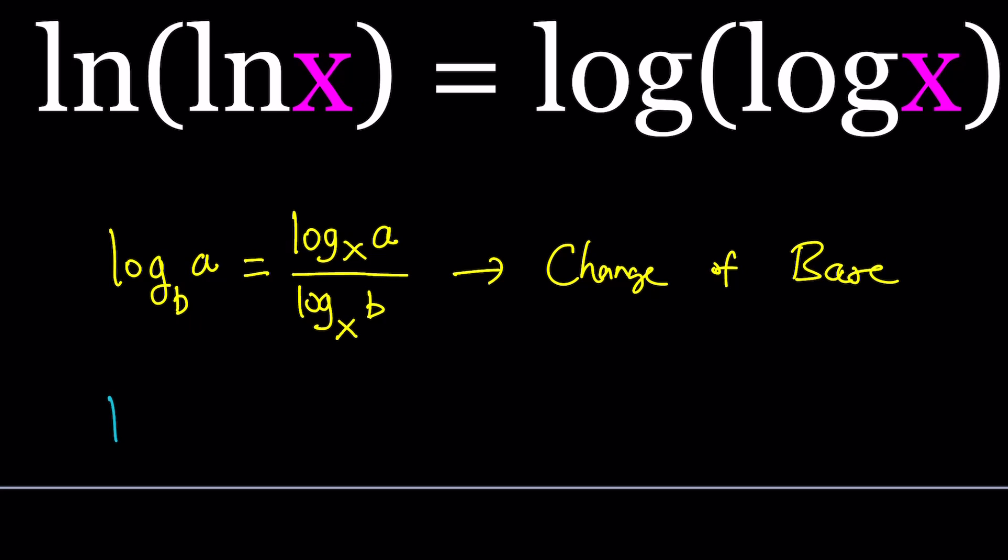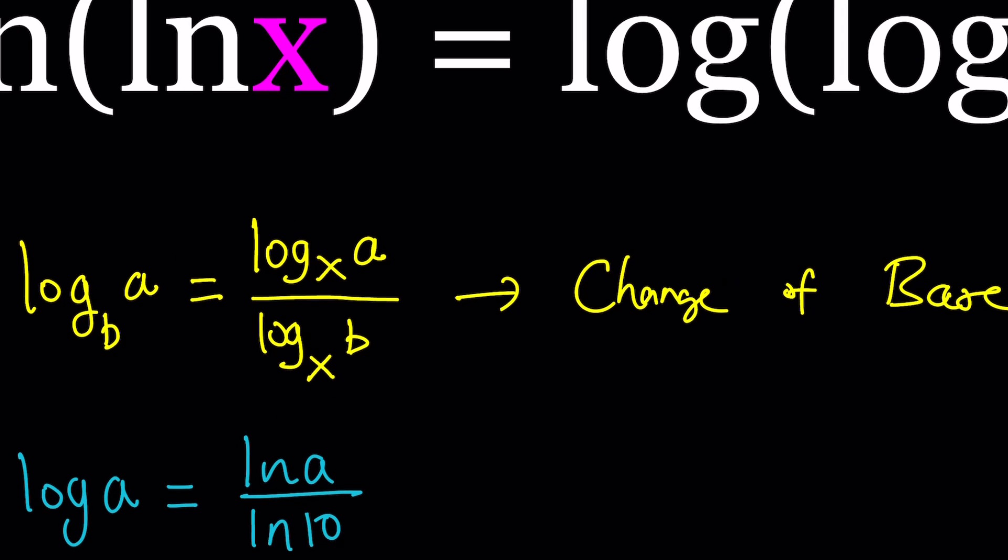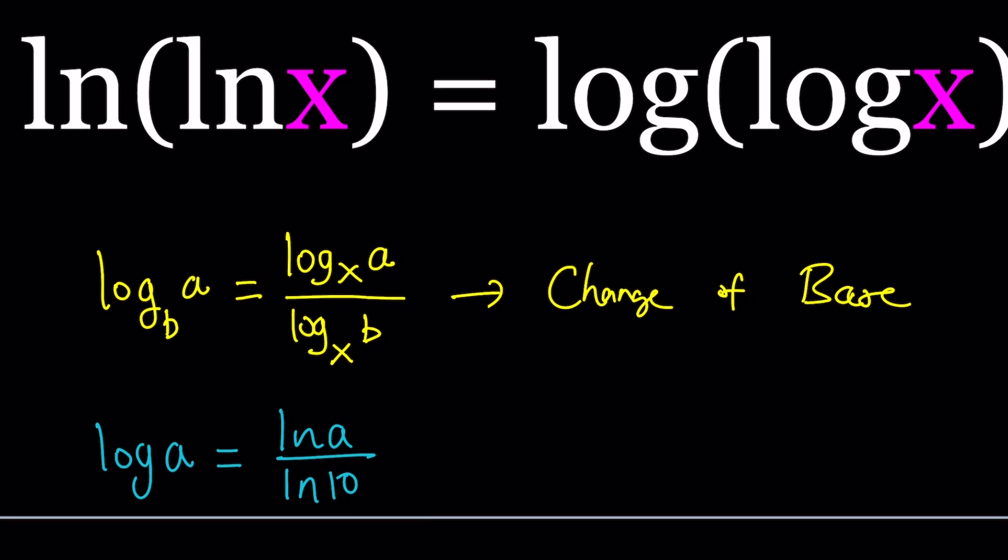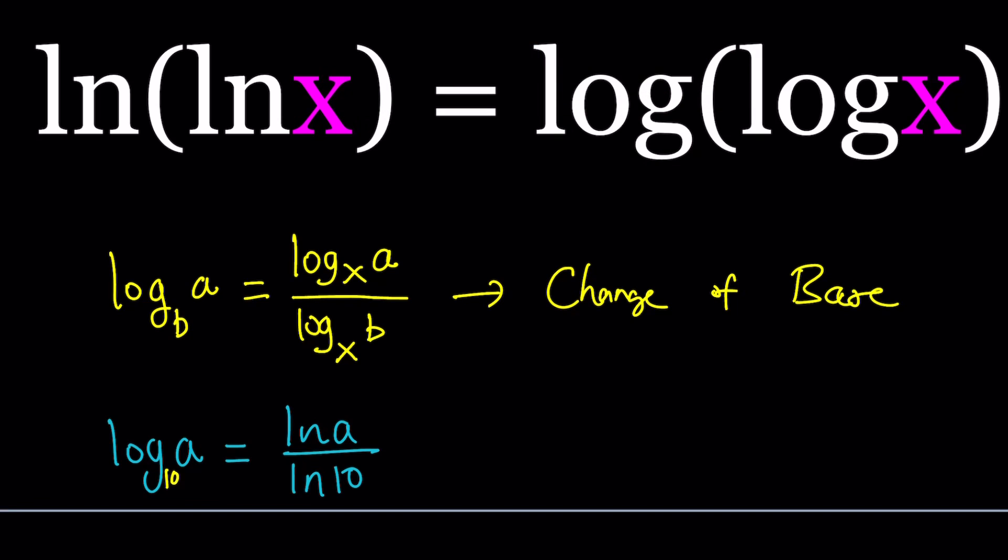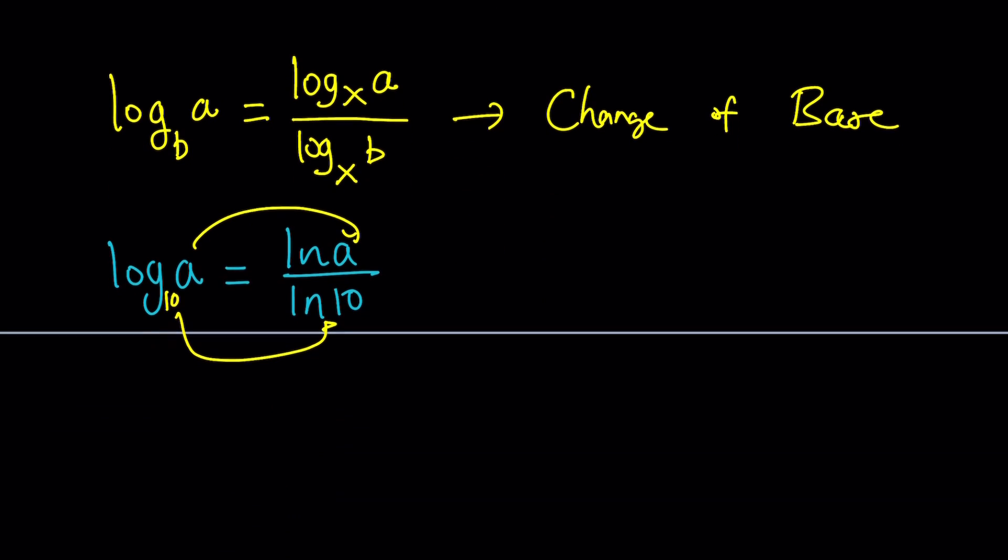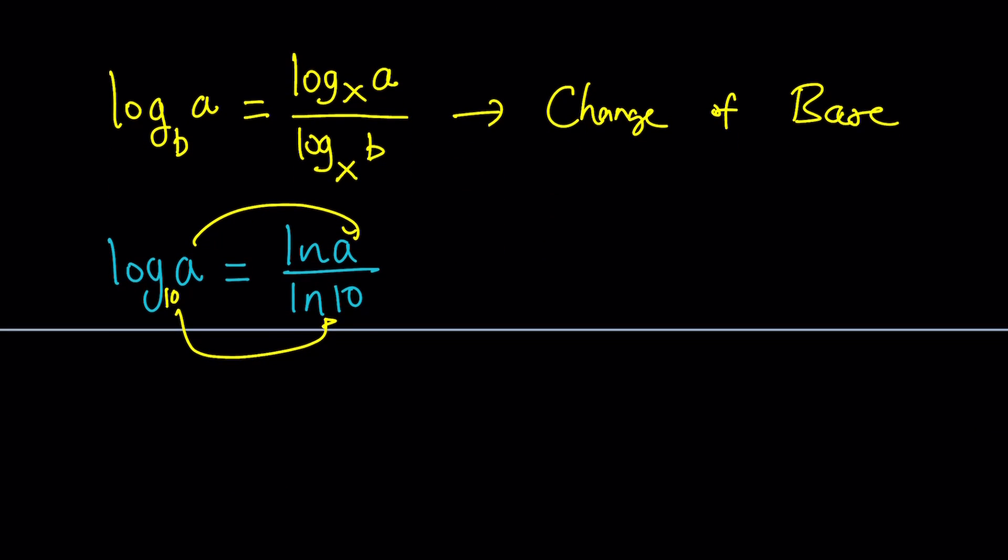Since we have base 10, let's say we have log a and I want to turn it into natural log. I would write ln a over ln 10, right? Because we have an invisible 10 here. We should have an invisible 10 here. So we have an invisible 10 and you can write it like this. A goes here and 10 goes here. So that's what I'm going to do.